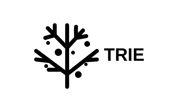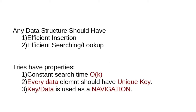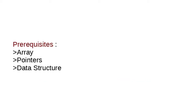The ultimate goal of any data structure is that insertion, searching, and deletion operations are efficient. Using Trie, the insertion and searching time of any data is constant time. Trie is based on the concept that each and every data element has a unique key. Trie combines the concepts of data structures — arrays and pointers — in an interesting way.